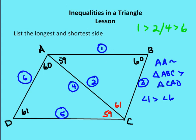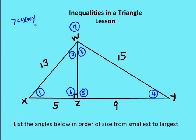Moving on to your challenge problem, which we'll review in the next edition when we talk about practice problems. I have seven different angles in this triangle — one, two, three, four, five, six, and seven. List the angles in order of size from smallest to largest. I'm sure you can work it out if you spend some time, and I'll review it when you come back and join us in the practice session of inequalities in a triangle in the next edition of Aughton Math.